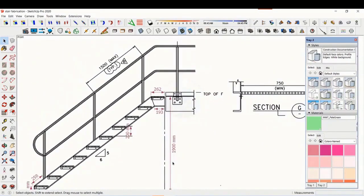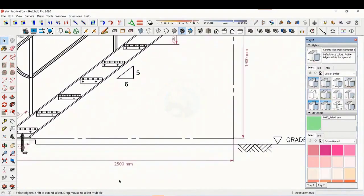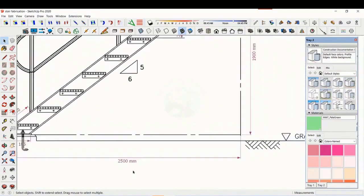The height of the staircase is 1900 millimeters and the length is 2500 millimeters. The width of the staircase is 750 millimeters.